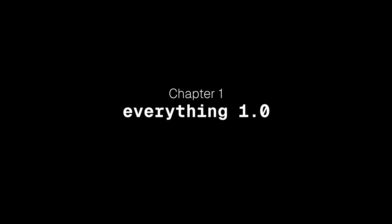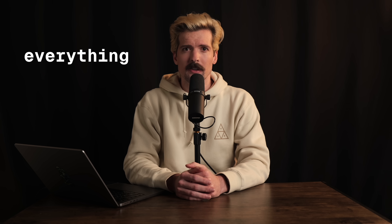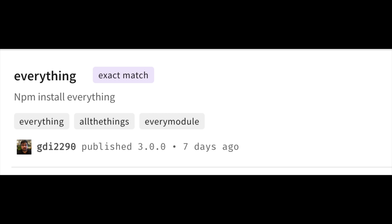Chapter 1: Everything 1.0. In 2015, PatrickJS published a pretty funny little package named Everything. What was it? Well, everything. Specifically, it had every single NPM package listed as a dependency — only 22,000 packages at the time, but still absolutely hilarious. This joke quietly sat on GitHub and NPM, no issues whatsoever.